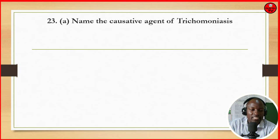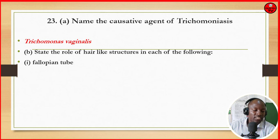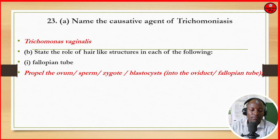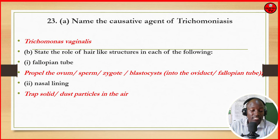Question 23: name the causative agent of trichomoniasis — it is Trichomonas vaginalis. State the role of hair-like structures in each of the following. Number 1, fallopian tube: they propel the ovum, sperm, zygote, and blastocysts into the oviduct or fallopian tube. Number 2, nasal lining: they trap dust or solid particles.